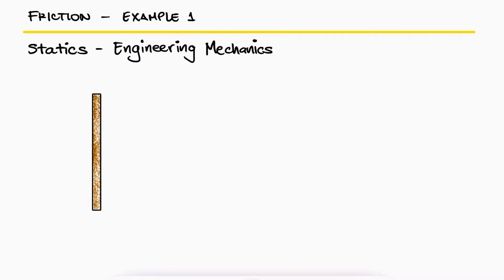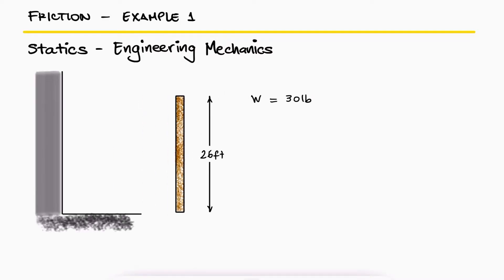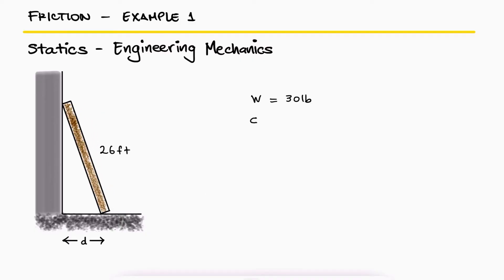A uniform pole has a weight of 30 pounds and a length of 26 feet. If the pole is placed against the smooth wall and on the rough floor in the position d equal to 10 feet,